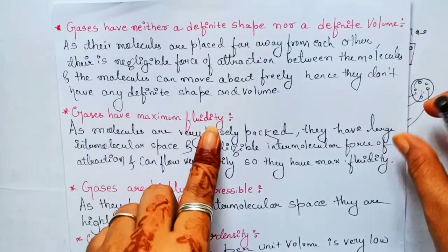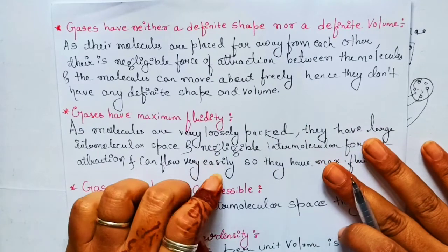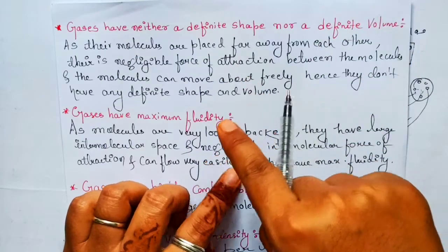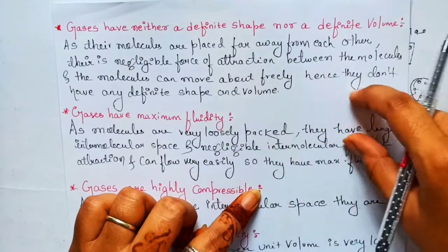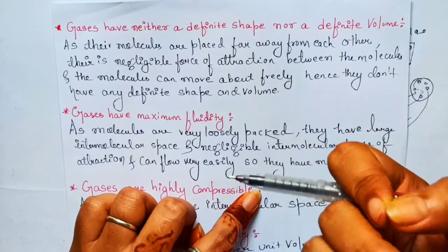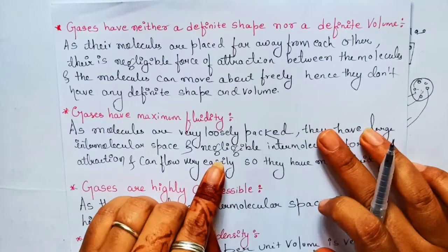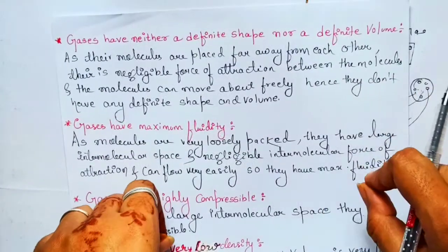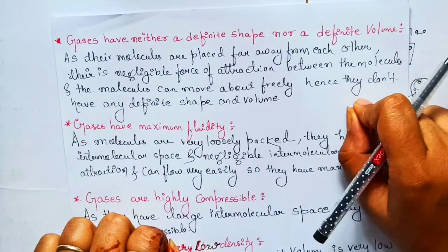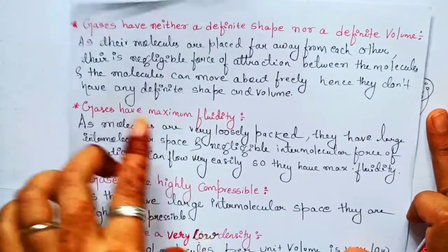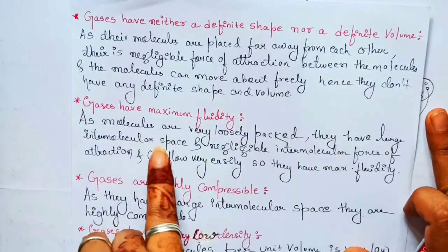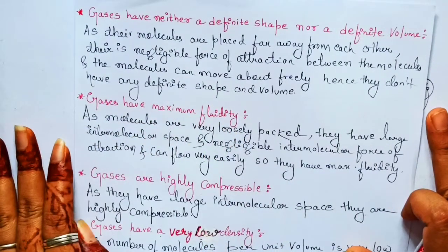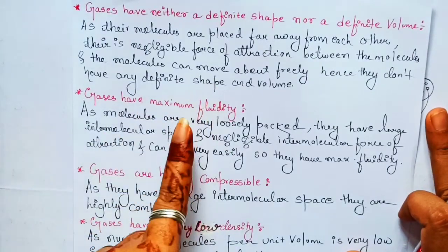Second property: gases have maximum fluidity — they can flow very easily. In liquids, we know they can flow, but gases can flow even more easily than liquids. The reason is that molecules are very loosely packed, they have large intermolecular space and negligible intermolecular force of attraction, so molecules can move freely from one place to another. Among the three states, gases have maximum fluidity, then liquid, then solid.